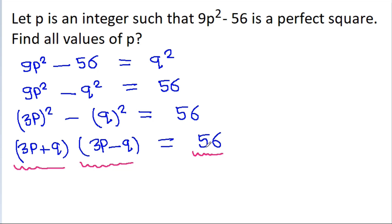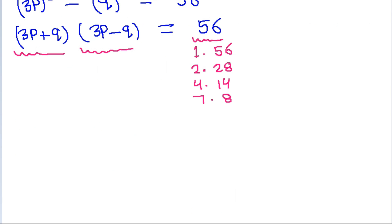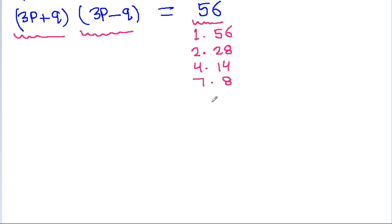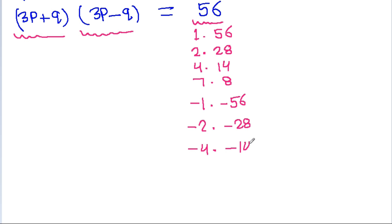So 56 as a product of two integers can be: 1 times 56, 2 times 28, 4 times 14, and 7 times 8. If we take negative integers, we get minus 1 times minus 56, minus 2 times minus 28, minus 4 times minus 14, and minus 7 times minus 8.